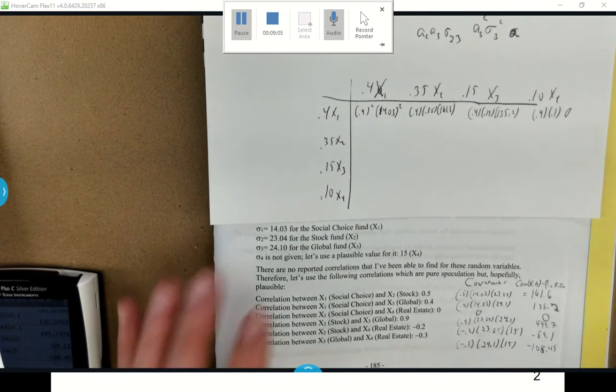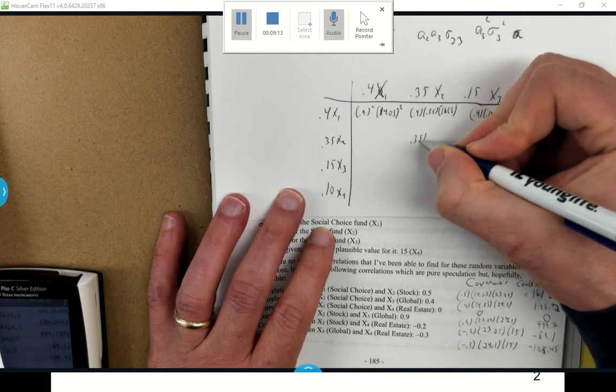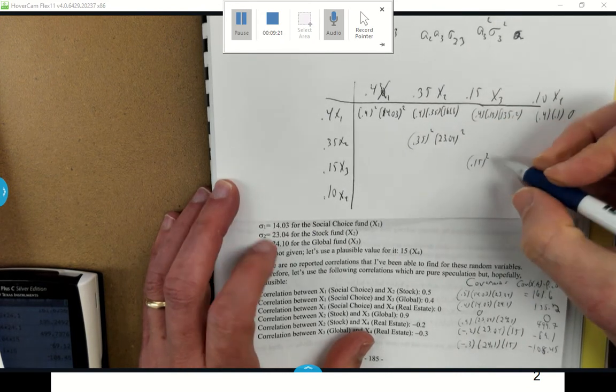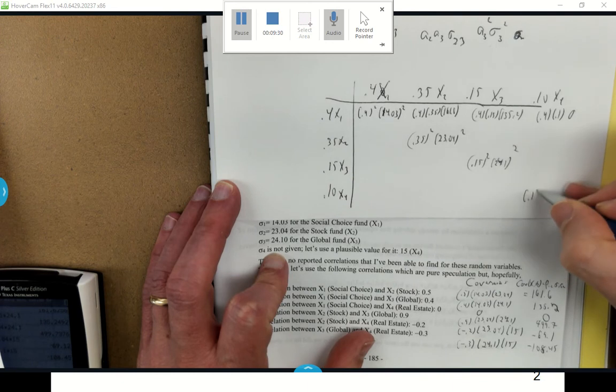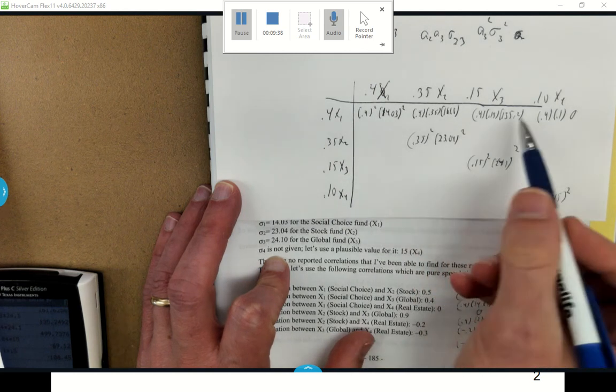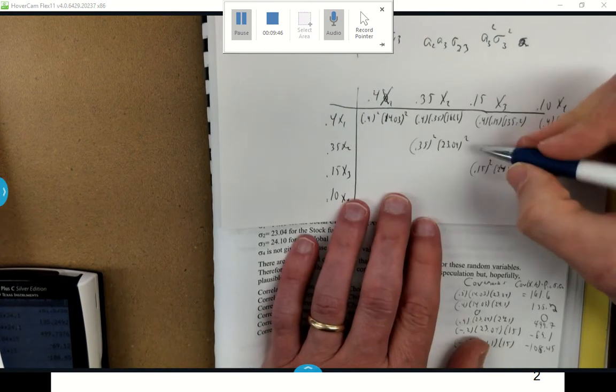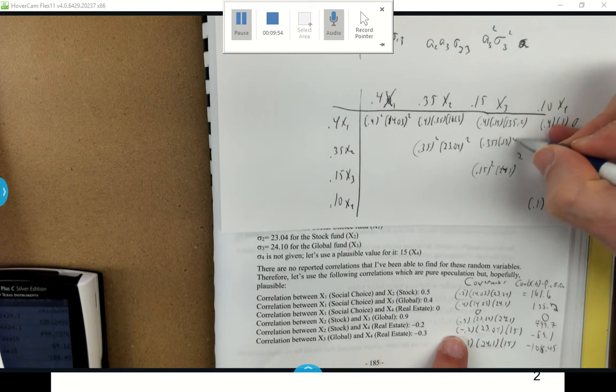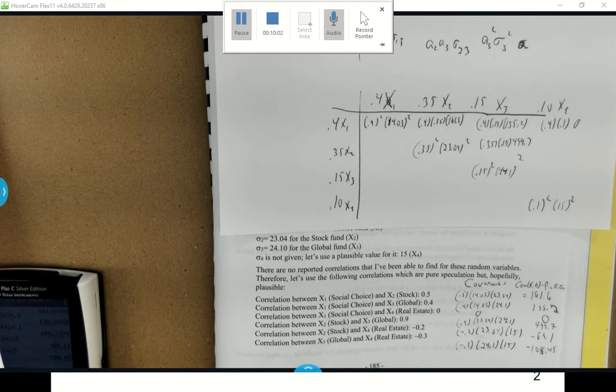I'm now going to fill out, and this would actually be the same value, it's just symmetrical across. This would be 0.35 squared times 23.04 squared. This would be 0.15 squared times 24.1 squared. Down here I'm getting the standard deviations which gives me the variances. And this would be 0.1 squared times 15 squared. Now if all these were independent, all we have to do is add up the diagonal and we would get the values. What I just do is add up all of these together, and that could then give me my variance for that particular value.